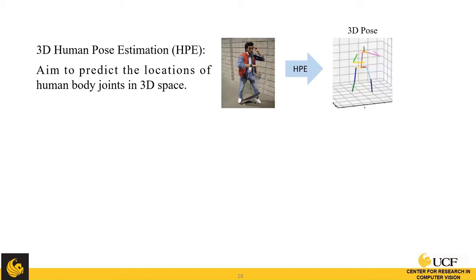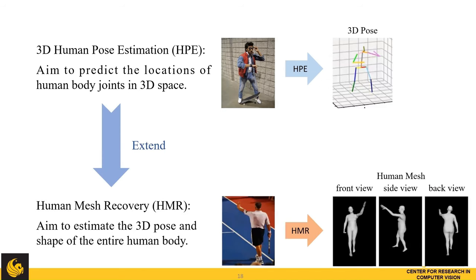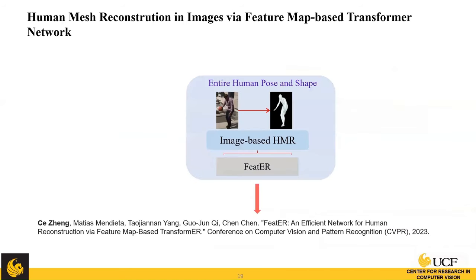Since we introduced 3D HPE, we extend our research to HMR. HMR is much more challenging than 3D HPE: for 3D HPE we only estimate the skeleton joints, but for HMR we need to estimate the entire mesh vertices of the human body. Next, I'm going to talk about my work Feater — human mesh reconstruction in images with a feature map-based transformer network. This work is published in CVPR 2023.